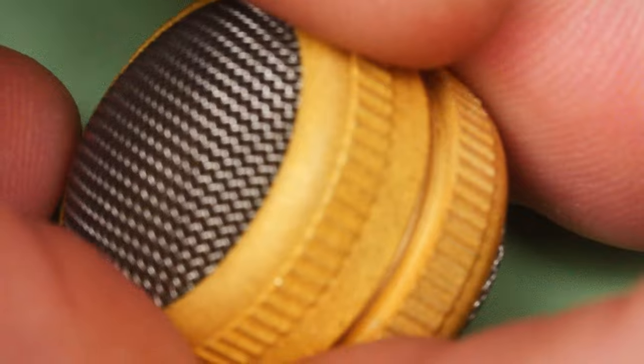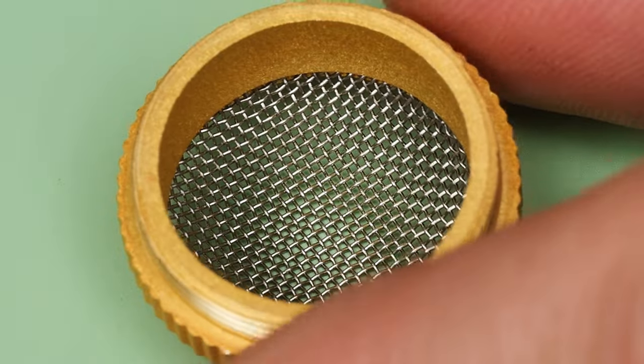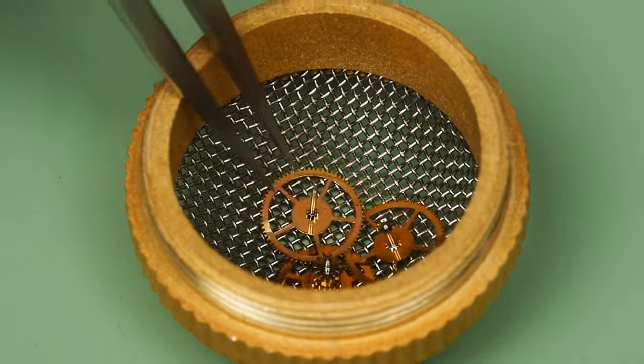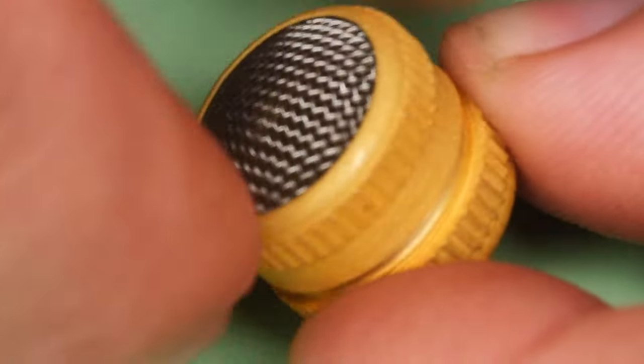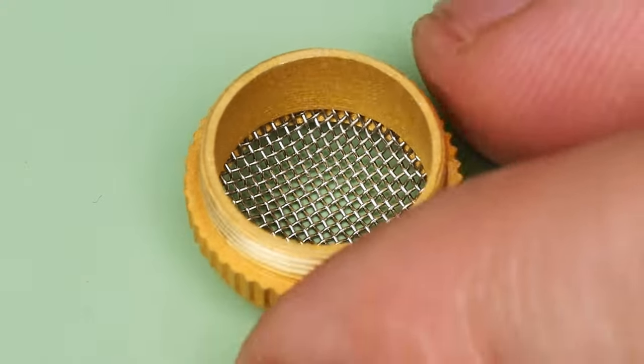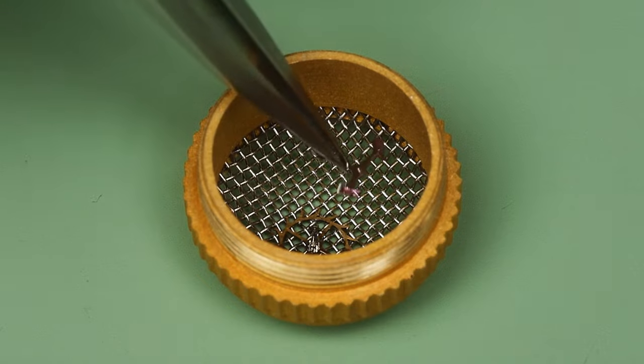As I add all the individual components to their respective cleaning baskets, I give them a close inspection. Removing hair that's wound around pivots, scraping away dried lubricants, and generally looking for damage at this point makes reassembly go a little more smoothly later on.